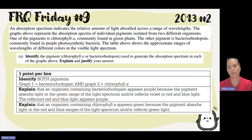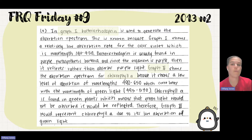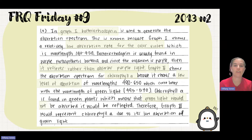For the other pigment, we explain why chlorophyll is green: it absorbs light in the red and blue ranges and reflects green light. So in graph one, bacteriorhodopsin is used, and in graph two, we see chlorophyll A. Graph one shows bacteriorhodopsin because there's low absorbency for violet, and it reflects rather than absorbs that purple light. Graph two is chlorophyll because there's a lower level of absorbency in the wavelength corresponding to green light, which is reflected rather than absorbed.